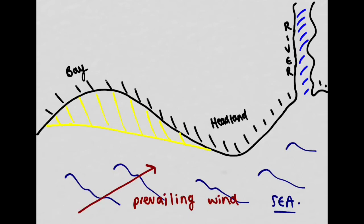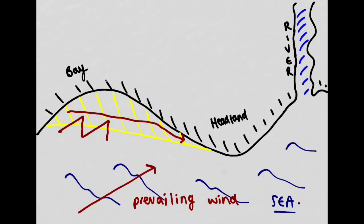With the prevailing wind coming from this direction, sediment on the beach is being pushed up onto the beach at this angle but brought back perpendicular. Through the process of longshore drift — LSD for short — the sediment is slowly being transported down the coastline in this direction. All this sediment is being transported down to this headland, where we have what we call a change in coastline.